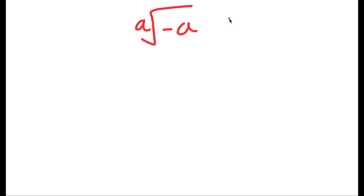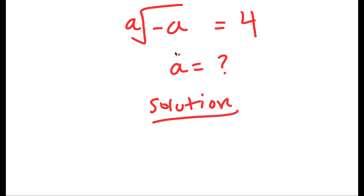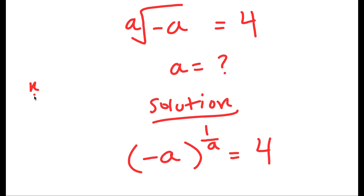In this video I'm going to solve the equation: the eighth root of negative a is equal to 4. I want to find the value of a. To solve an equation like this, I'm going to first rewrite the eighth root of negative a as negative a to the power of 1 over a, because the nth root of a number x is the same thing as x to the power of 1 over n.